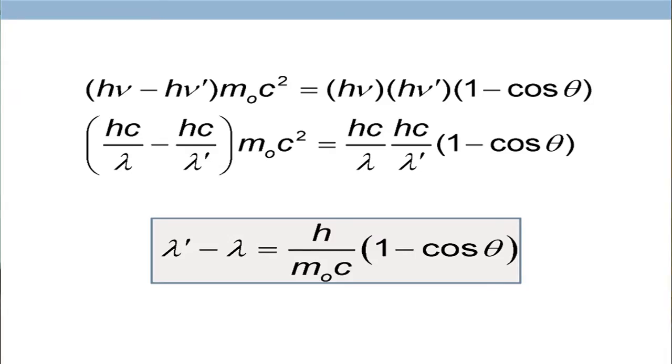Theta is the angle at which the photon has been scattered. This tells you that if a photon is observed after scattering at angle theta from the incident direction, its wavelength has changed. Lambda-prime must go up if the energy goes down — h-nu-prime will be lower than h-nu, so its wavelength will be larger. The increase in wavelength is given by h over m0c times (1 minus cosine theta). This is the famous Compton effect expression.